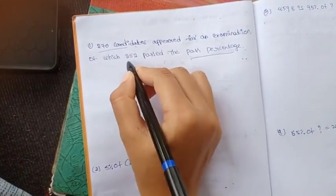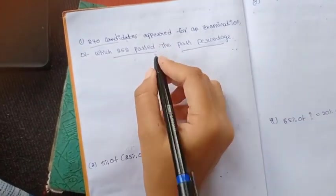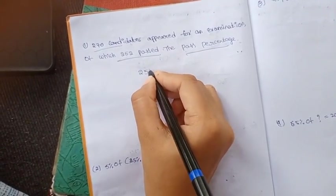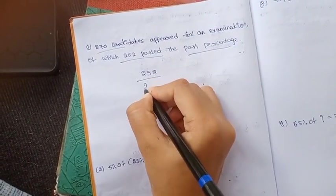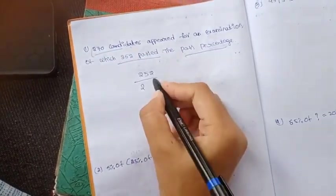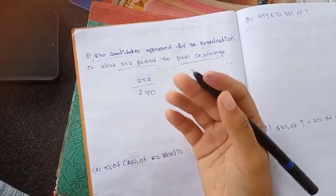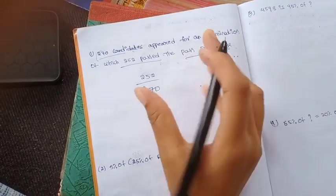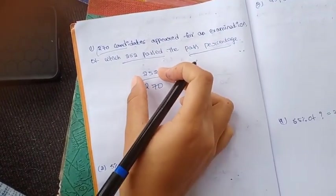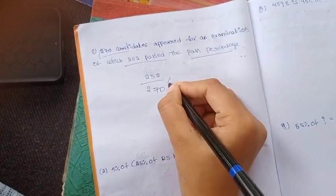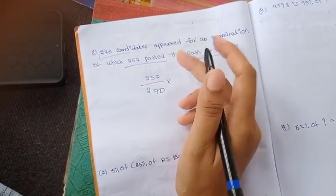The total students are 270 and passed students are 252. To find the pass percentage, total students are 270, so we will find out the pass percentage.